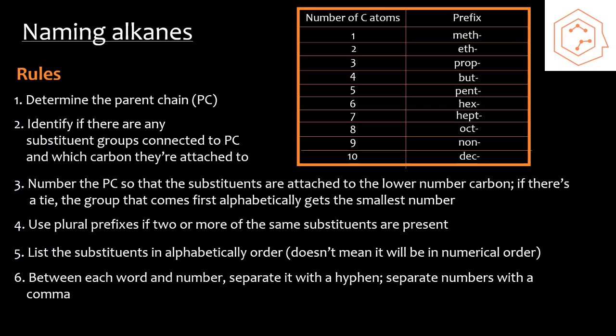Sixth, between each word and number, you're going to separate with a hyphen, whereas if you have multiple numbers in a series, you're going to separate with a comma. And finally, the name is going to end with the prefix for your parent chain, as stated above, and the functional group suffix. For alkanes, if there's no other functional groups, then you're just going to use the standard ending, anes.